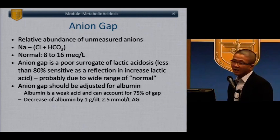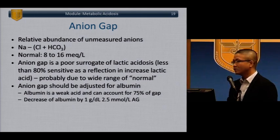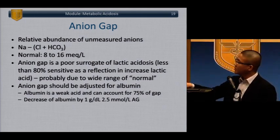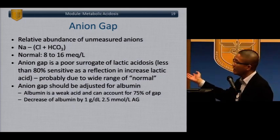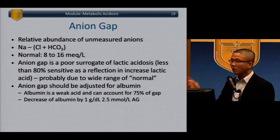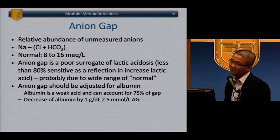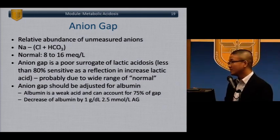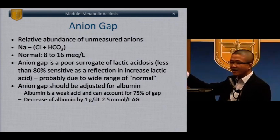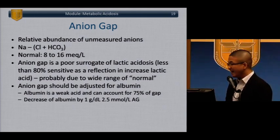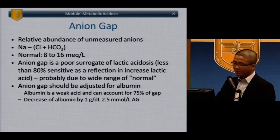With metabolic acidosis, evaluate the anion gap. Normal anion gap is 8 to 16 mEq/L. Anion gap is a poor surrogate of lactic acidosis — only less than 80% sensitive as a reflection of increased lactic acid. Anion gaps should be adjusted for albumin, which is considered a weak acid and can account for up to 75% of your anion gap. There is a correction factor for albumin as it pertains to anion gap.